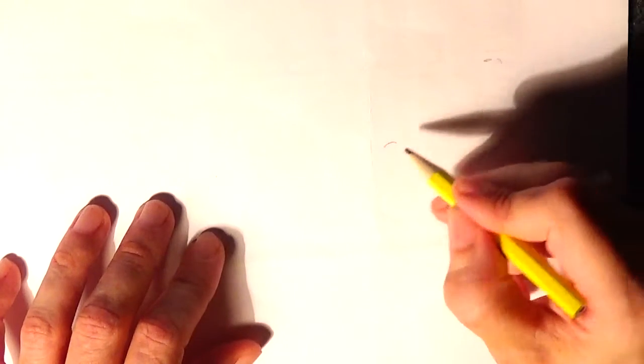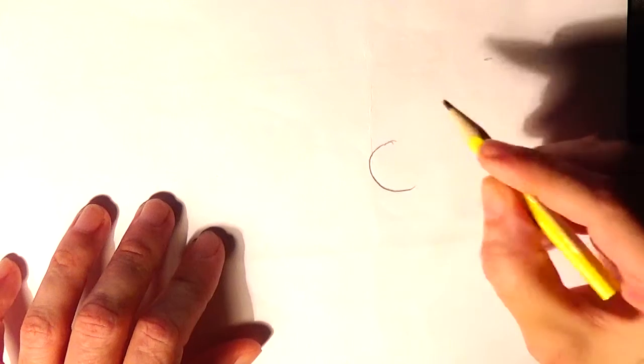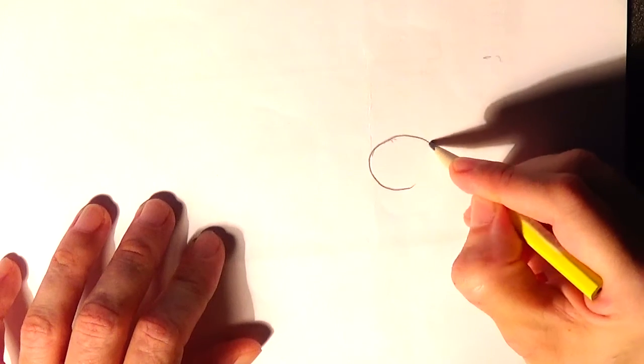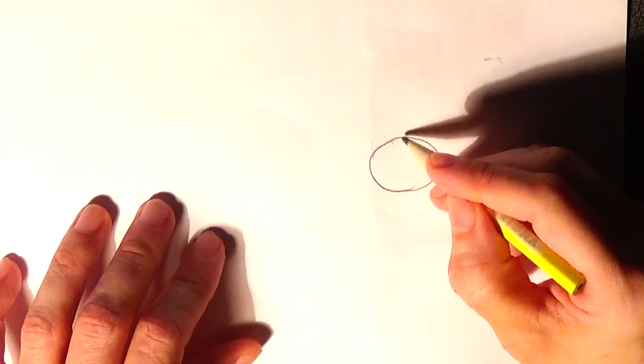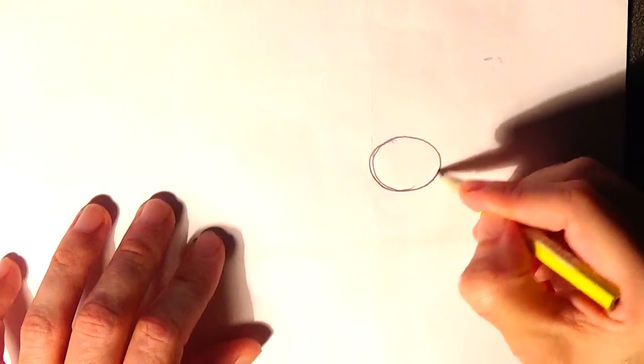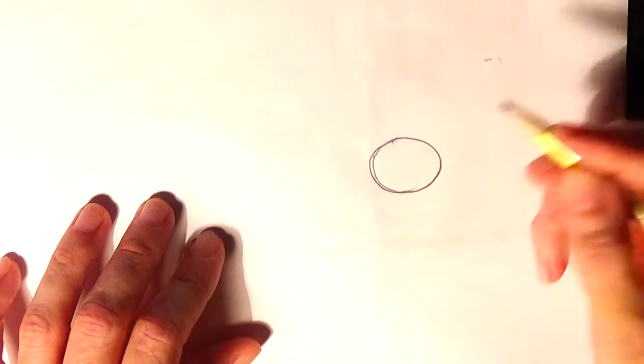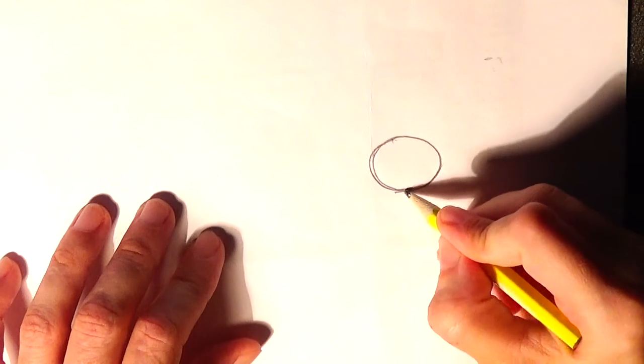Let's begin drawing a flower. First, we make a circle. And the circle doesn't have to be perfect. Like this.